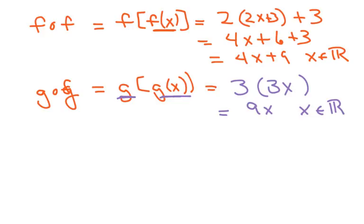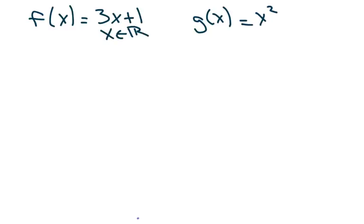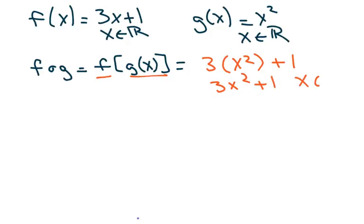This is pretty simple. The next one is problem 31: f of x equals 3x plus 1, and g of x equals x squared. Both of these are all real numbers, so the domain on all of these is going to be all real numbers. So for f composed of g of x, I write down f, and everywhere there's an x, I dump in x squared. I get 3x squared plus 1, where x belongs to all reals.